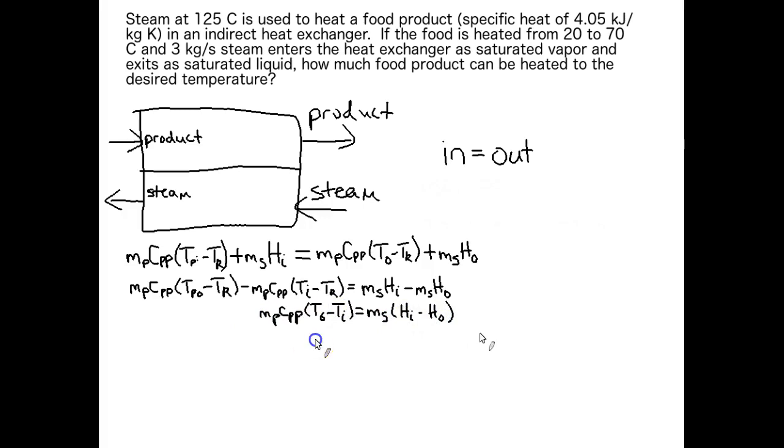So what we're looking for here is the mass of the food product. We're given the Cp of the food product in the problem. We're given the incoming and outgoing temperatures of the product. We are given the mass of the steam, and we can find the enthalpies of the steam in our steam tables. So all we're left with is mass of the product. So let's get that by itself. There you have it. There's our equation for mass of the product.